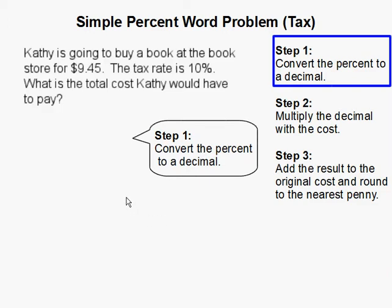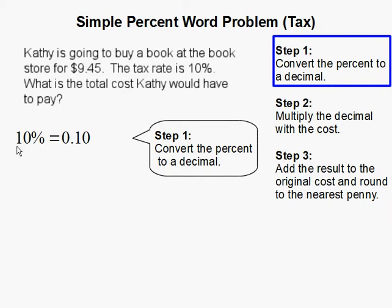The first step is to convert the percent to a decimal. Our tax rate is 10%, and we are going to convert that to a decimal. In order to do so, we move the decimal place to the left two times, and that will result in 0.10. We can also simplify our decimal to 0.1.